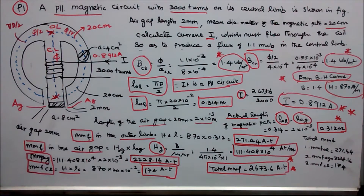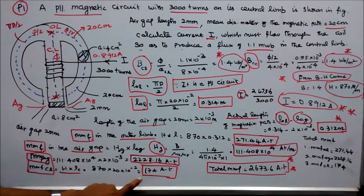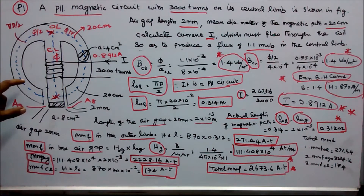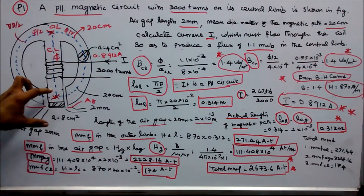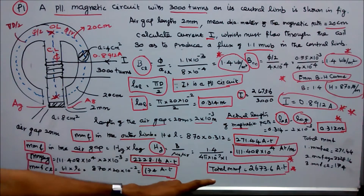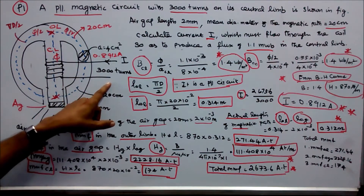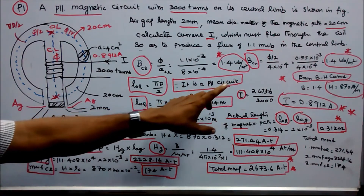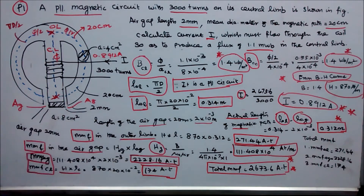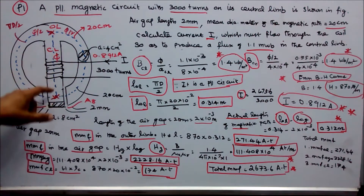MMF in the air gap = 111.408 × 10⁴ × 2 × 10⁻³ = 2228.16 ampere-turns. MMF in the central limb: length = 20 cm, H = 870, so 870 × 20 × 10⁻² = 174 ampere-turns. Total MMF = 271.44 + 2228.16 + 174 = 2673.6 ampere-turns. Since MMF = N × I and N = 3000, I = 2673.6 / 3000 = 0.8912 A. So 0.8912 A is required to produce a flux of 1.1 mWb in the central limb.